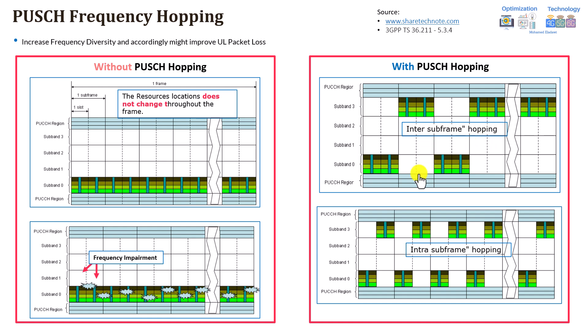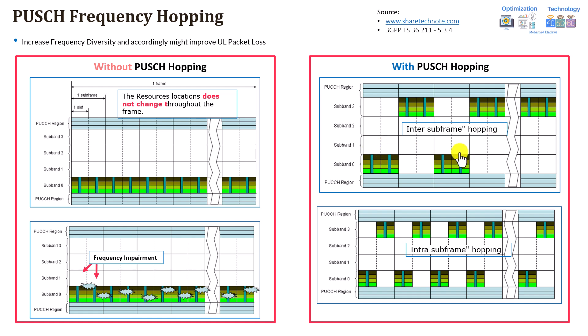For example, looking at this picture, in the first sub-frame the resource is allocated here, and in the second sub-frame it is allocated at a different sub-band or different resource block. This creates frequency diversity, which can be reflected in your quality and accordingly in your coverage. It can improve packet loss and voice quality in general.